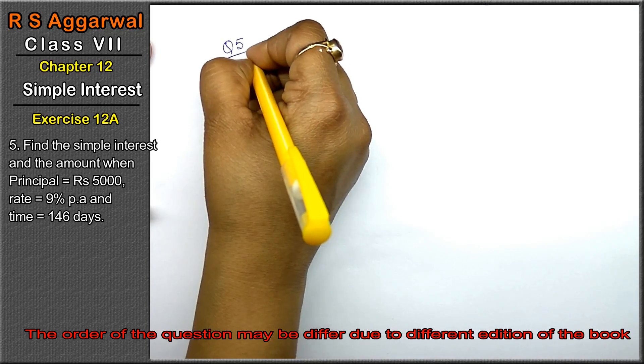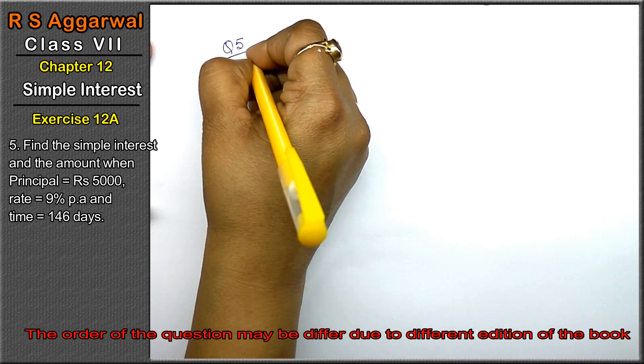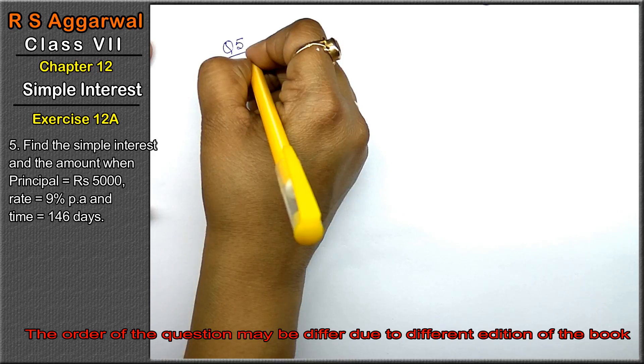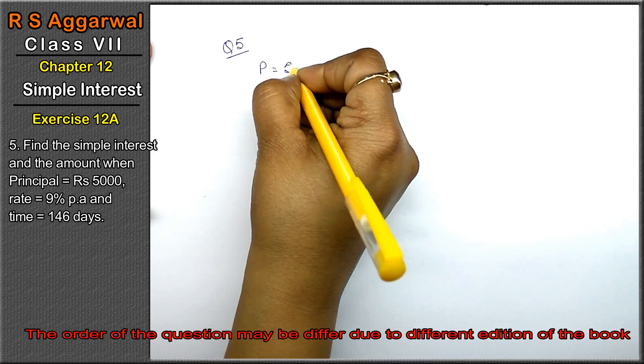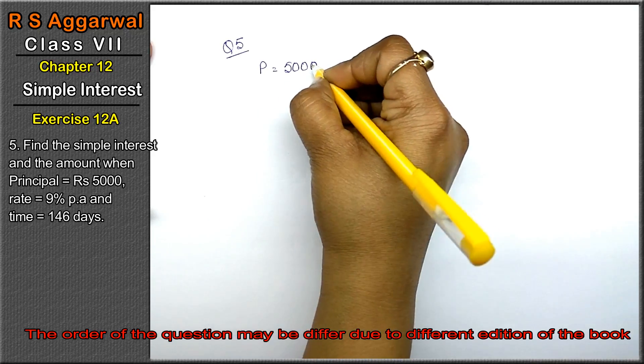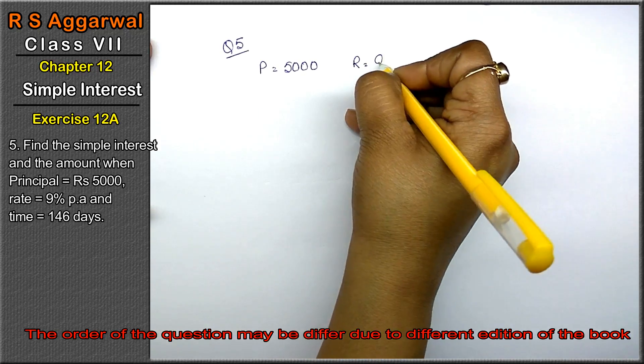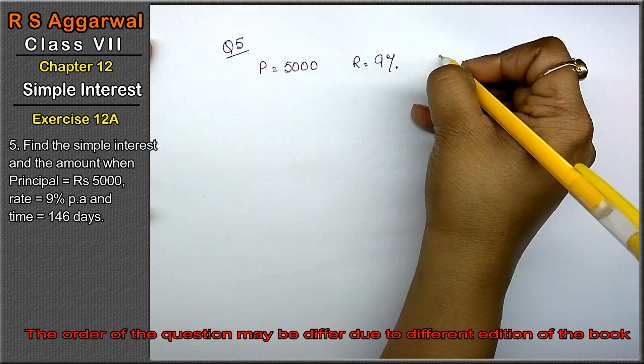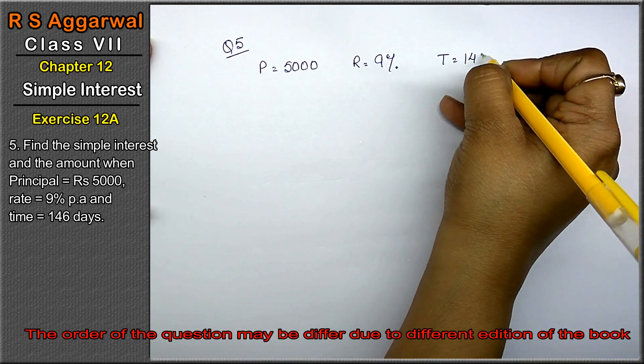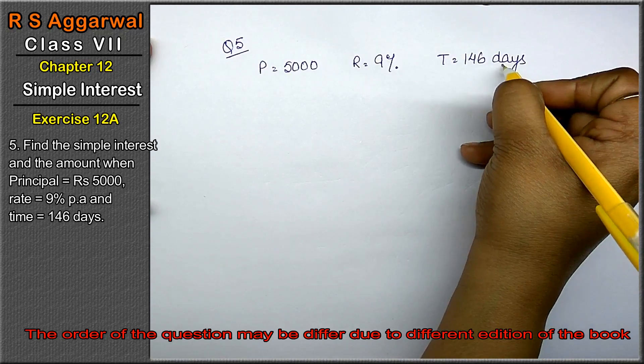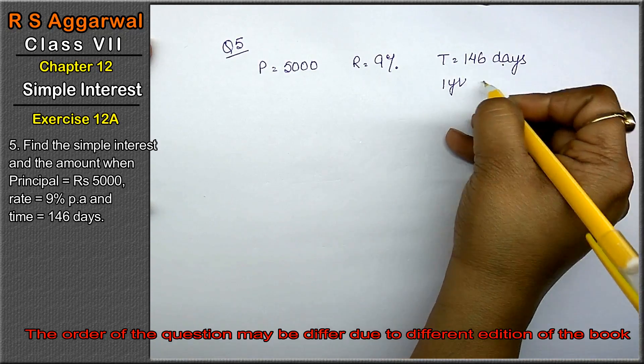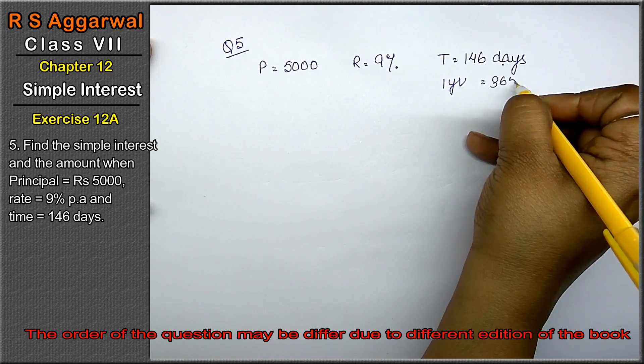Question number fifth: Find the simple interest and the amount when principal equals 5000, rate equals 9%, and time equals 146 days. As we know, one year equals 365 days.